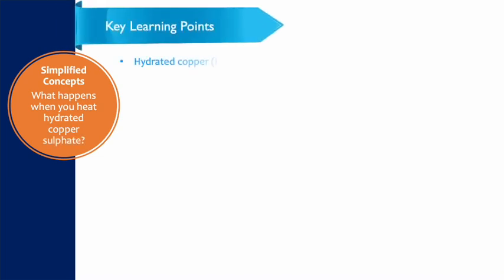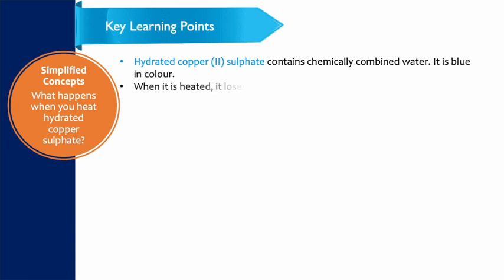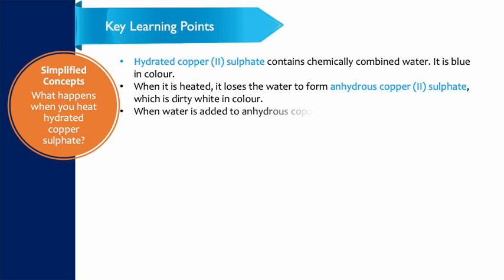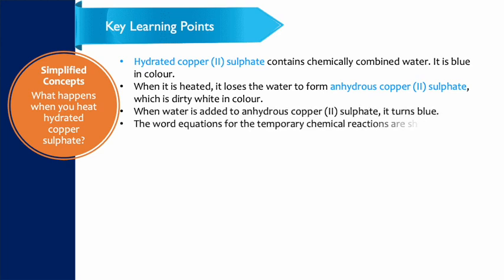These are the key learning points: Hydrated copper sulfate contains chemically combined water. It is blue in color. When it is heated, it loses the water to form anhydrous copper sulfate, which is dirty white in color.